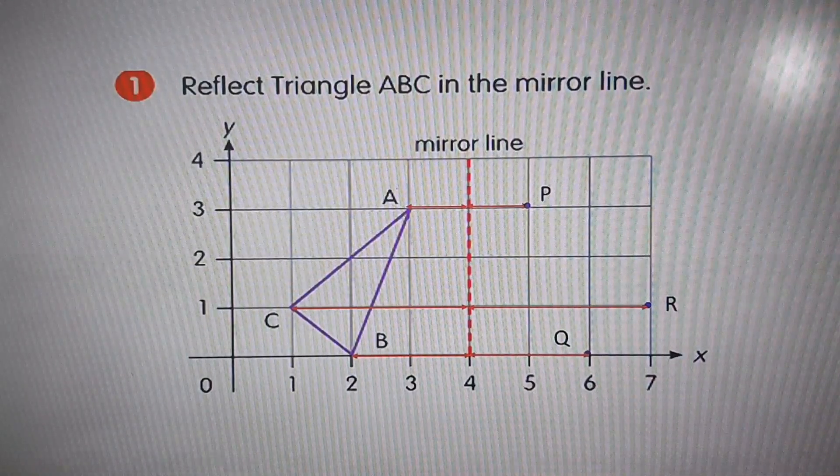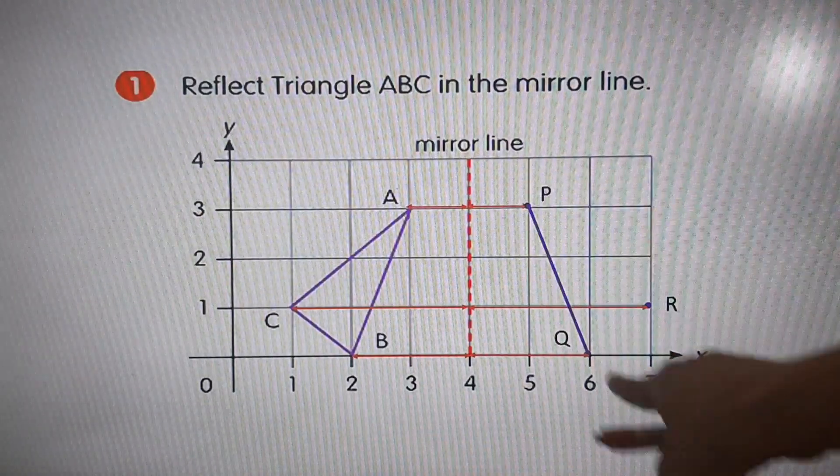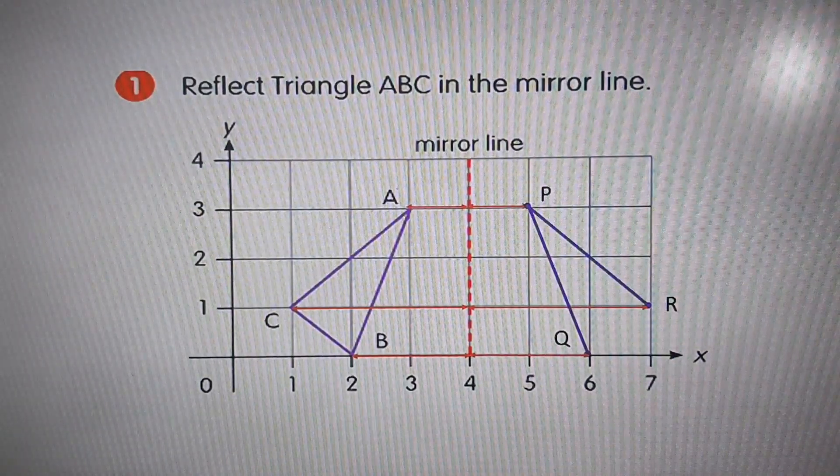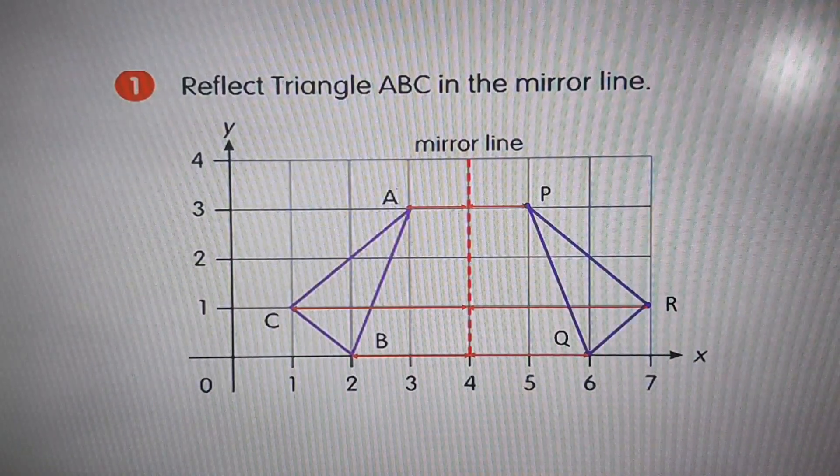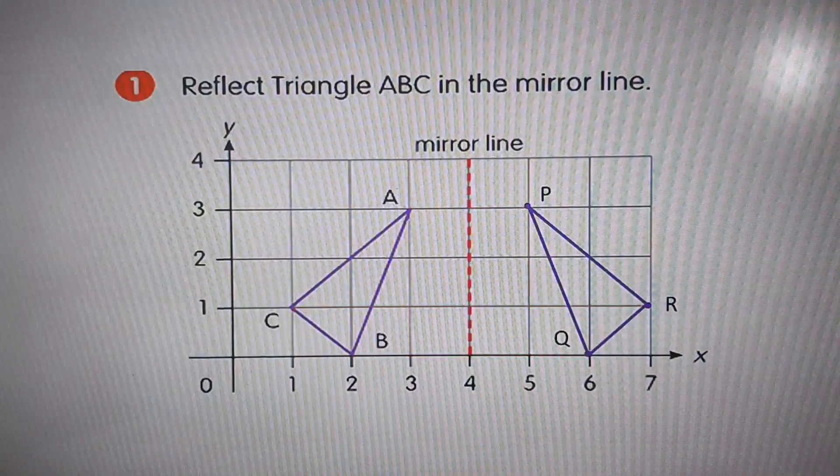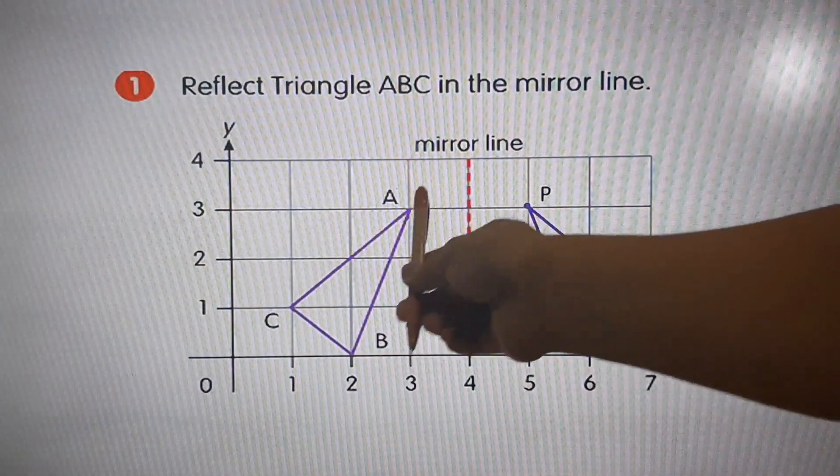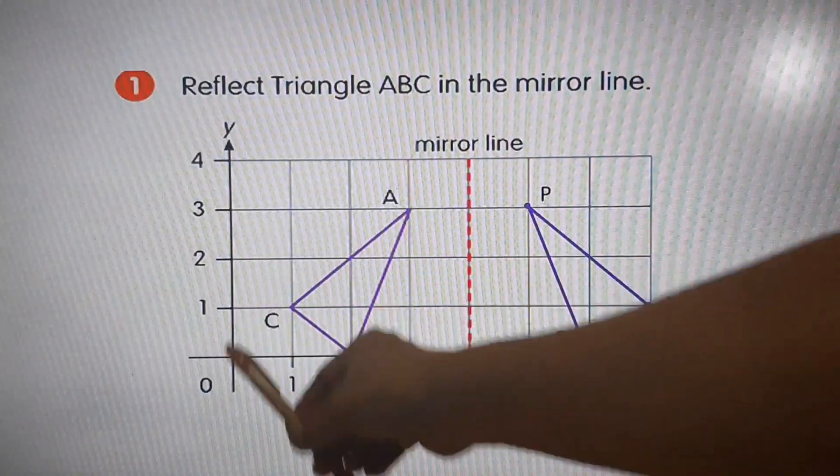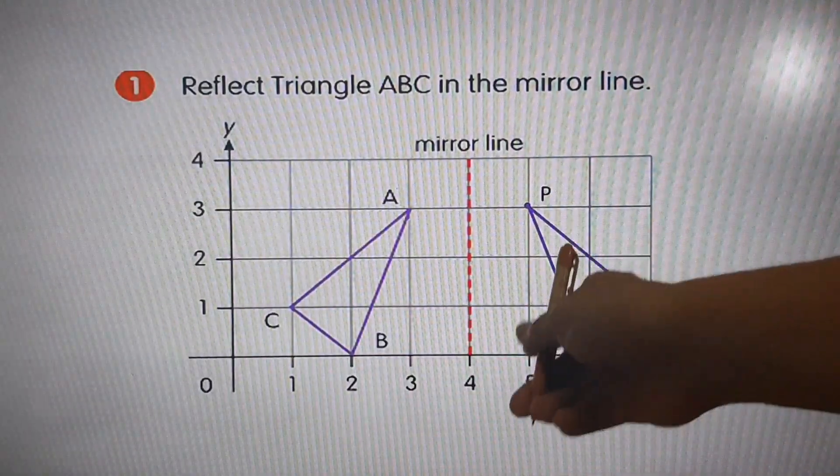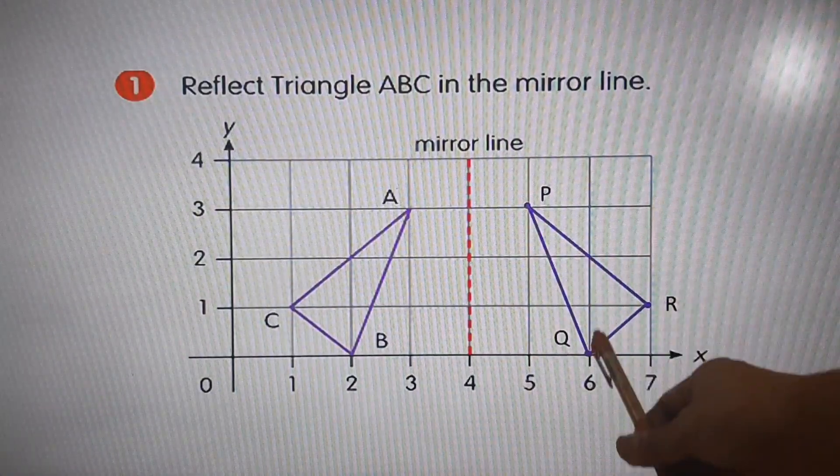Now, let's connect the lines from P to Q, and then P to R, and then R to Q. So, it will look like this. That's the reflection of triangle ABC. So, we name this now as triangle PQR.